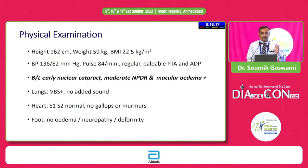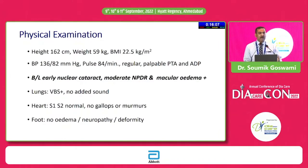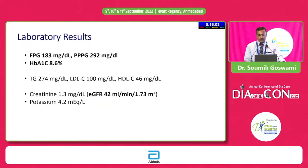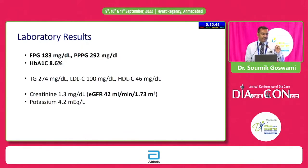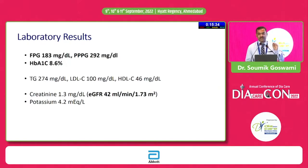On examining her, her body weight is normal and her blood pressure is normal. Examination of the eyes reveals that retinopathy has already set in and she has macular edema as well. Cardiorespiratory examination is normal and examination of her feet is normal as well. Her blood glucose levels are way above normal, with an A1c of 8.6%. Her creatinine is 1.3 — it does not look sinister, but once you calculate eGFR, you realize she already has moderate renal dysfunction with an eGFR of about 42.